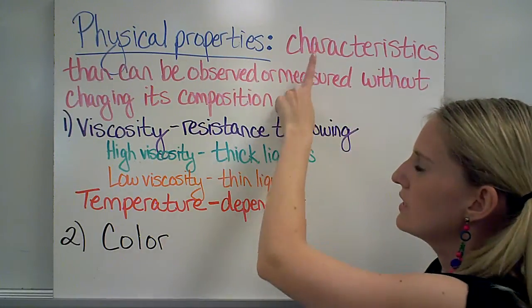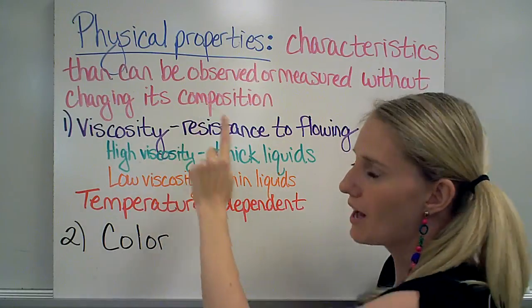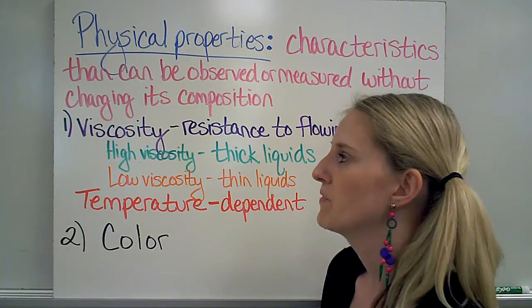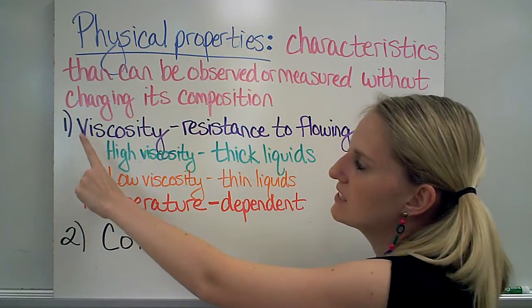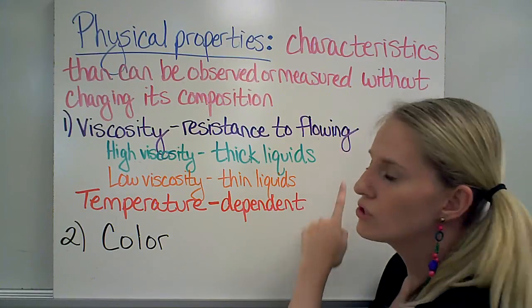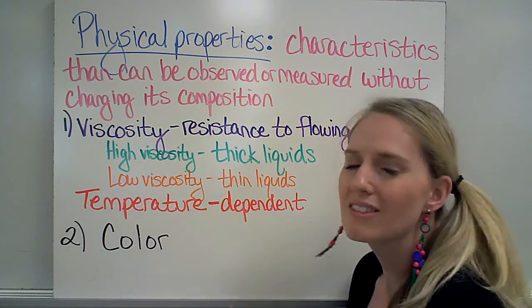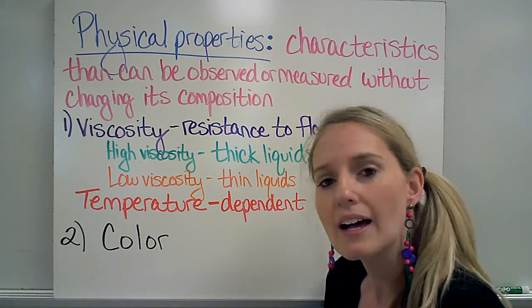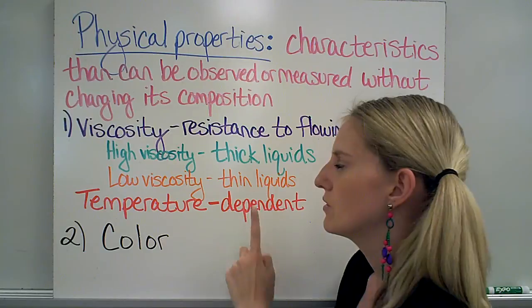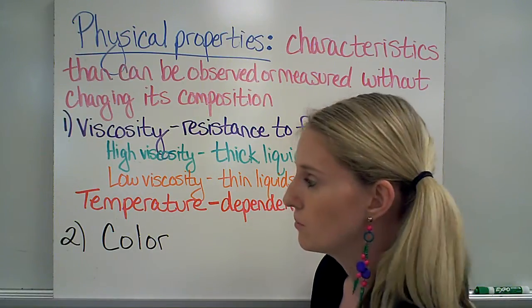Physical properties are characteristics that can be observed or measured without changing the composition of the material, or what the material is made of. One example of a physical property is viscosity, which is how resistant that material is to flowing. Liquids that have a high viscosity are thick liquids like honey, molasses, or syrup, where liquids that have a low viscosity are thin liquids like water or vinegar.